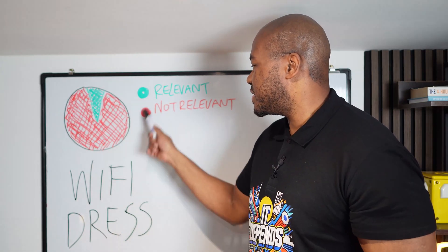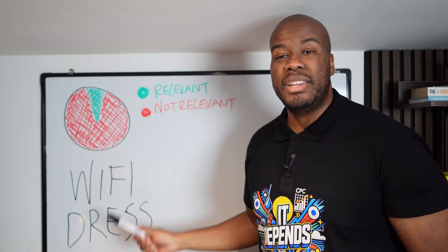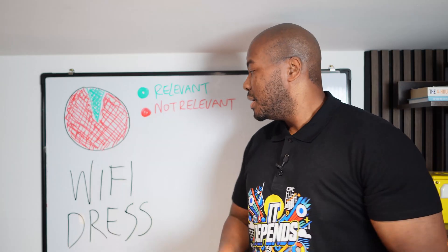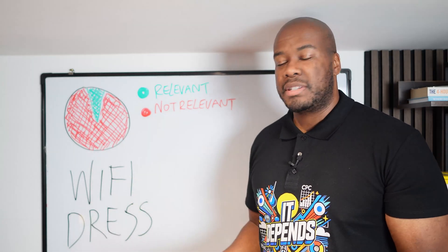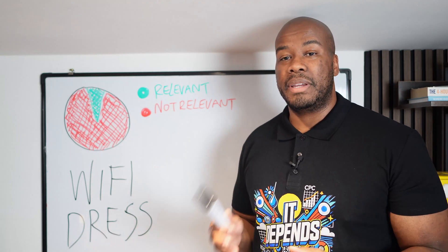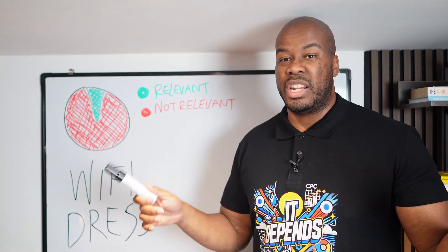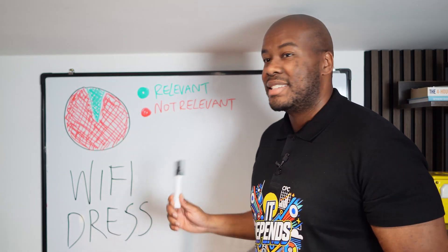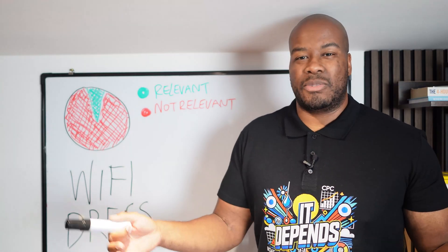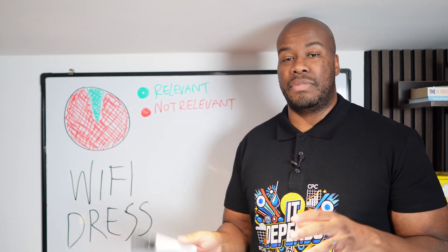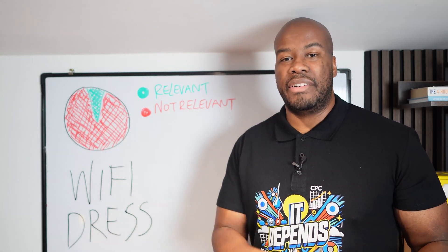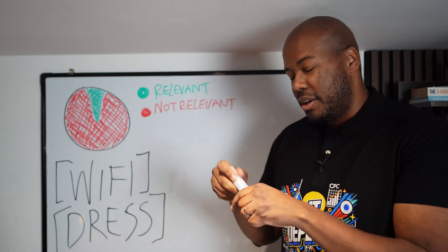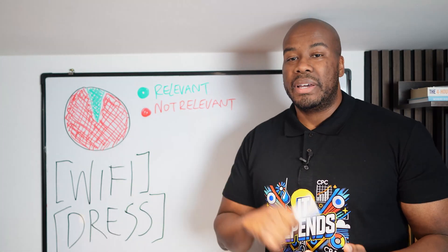This pie chart represents users searching for two types of term — real examples from real campaigns I manage where I had to be very careful with negative keywords. When you think about a broadband or internet comparison website and the term 'Wi-Fi' turns up in the search terms report, you probably think that's way too generic — make it an exact match negative. Another e-commerce client running search campaigns had the term 'dress' turn up in their search terms report. Again, way too generic. What type of dress? What color? What style? So you might think to make these exact match negatives — and that's typically what you would do. Here's why this could be a mistake.